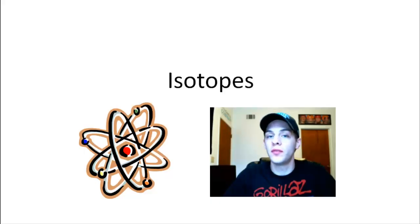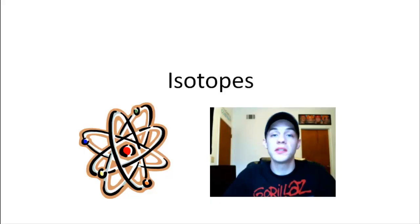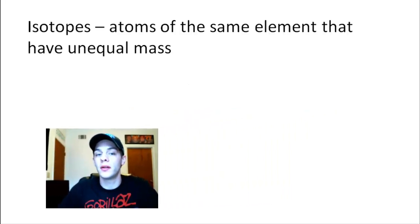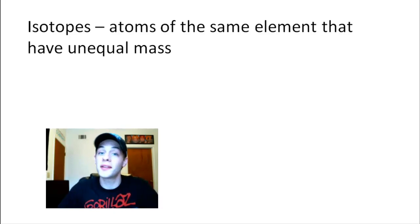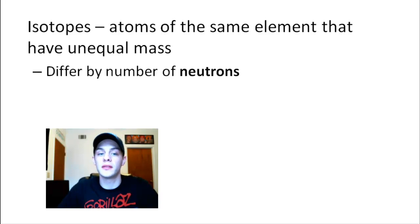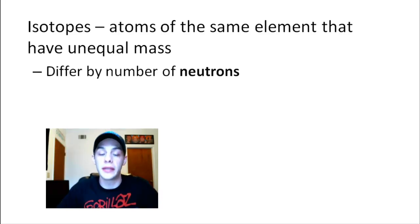Hello everyone! In this video we're going to talk about isotopes. When we talk about isotopes, we're talking about atoms of the same element — in other words, they have the same number of protons in their nuclei — yet they have unequal masses. The reason their masses are different is because they differ in the number of neutrons in their nuclei.